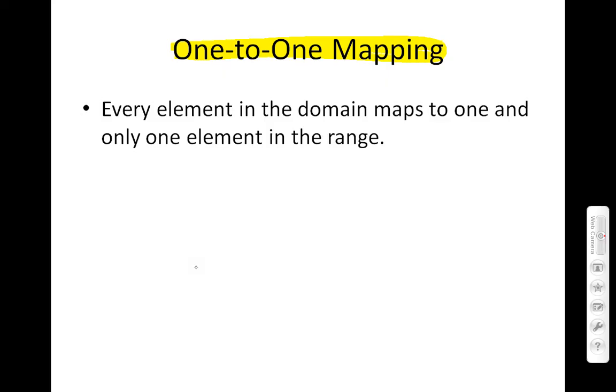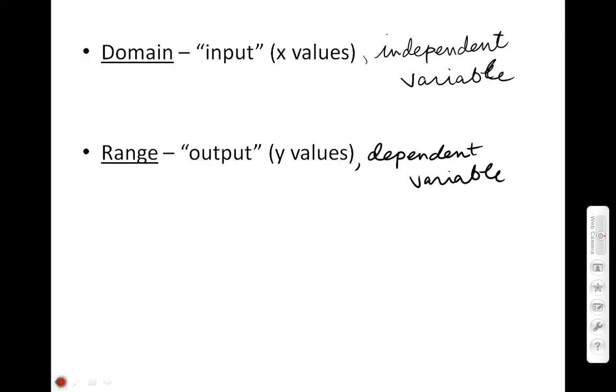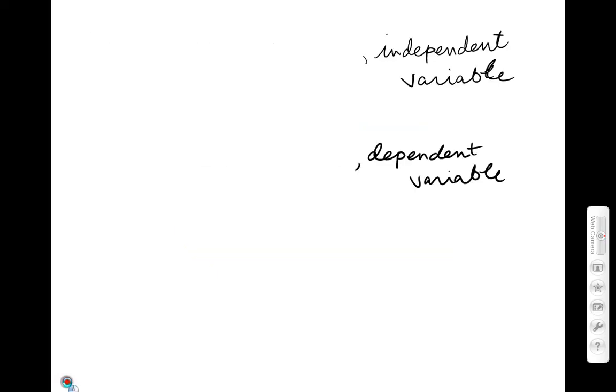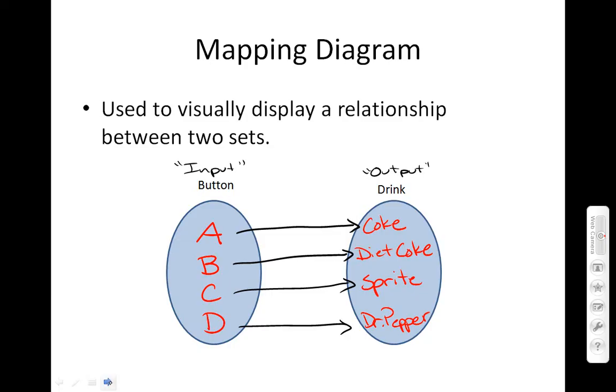So we've already looked at an example that was a one-to-one mapping. I'll go back and look at some. How about we flip back and go back to the Coke machine. Okay, here's the Coke machine slide.